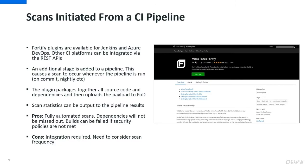What about scanning from a CI pipeline? We have plugins available for several CI platforms including Jenkins and Azure, and you can integrate with other CI platforms such as Bamboo using our REST APIs. All you do is add an additional stage to your pipeline, and when that pipeline runs — whether on a commit or nightly — the scan will occur as well. The plugin packages together all the source code and dependencies, uploads it to FOD, and the scan starts.